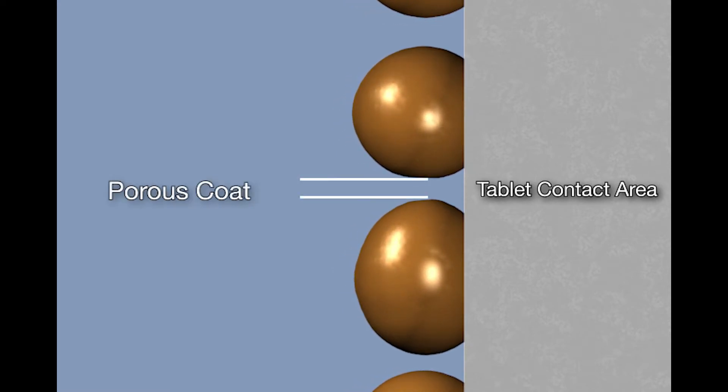If the evaporation rate is too high, the polymer chains have insufficient time to settle completely over the tablet contact area and will produce a porous coat.